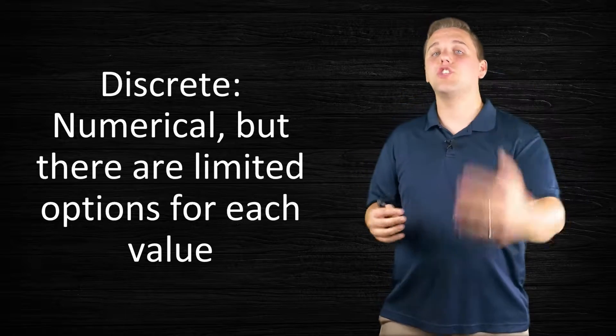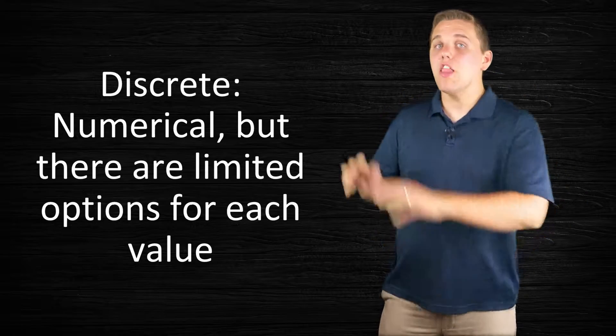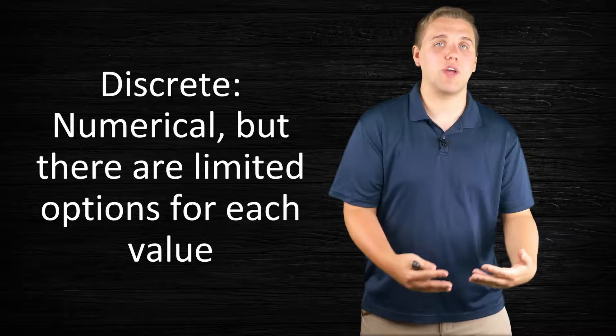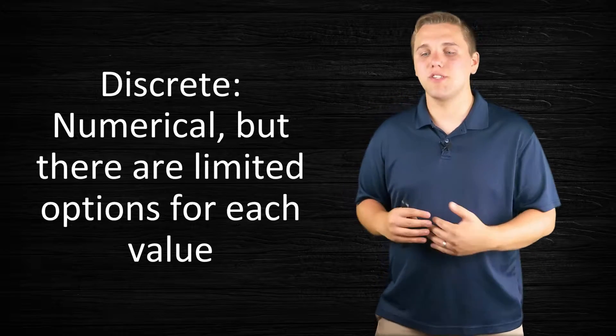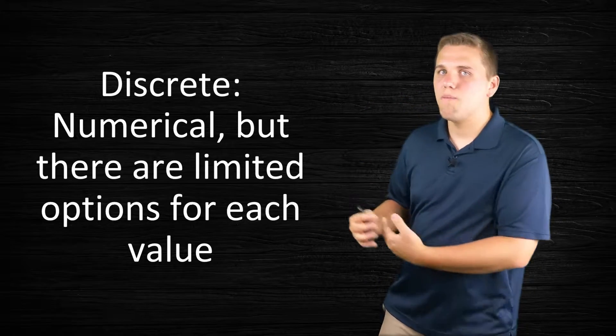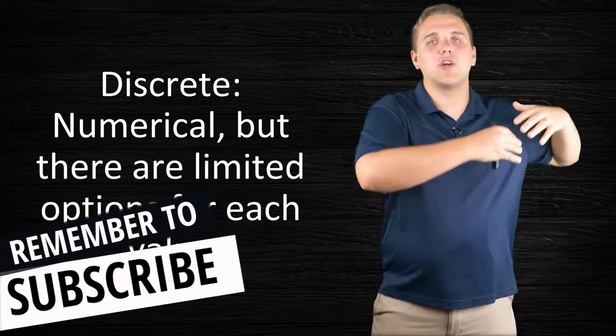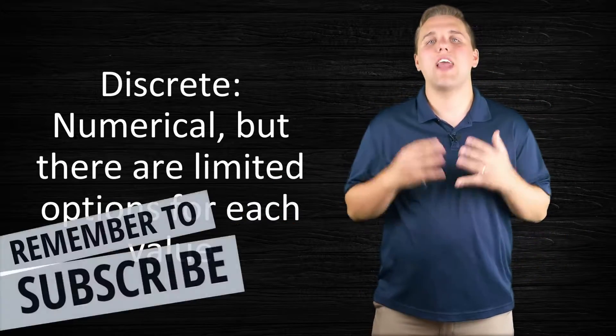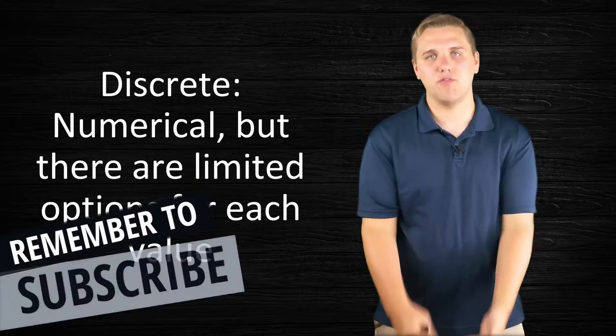Now there are actually two types of numerical variables. The first type is called discrete. Discrete variables are numerical, but they are limited in terms of the number of options that you can have in response to that observation.